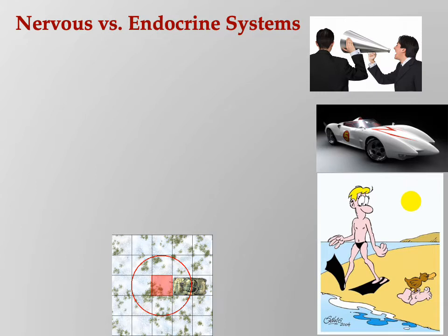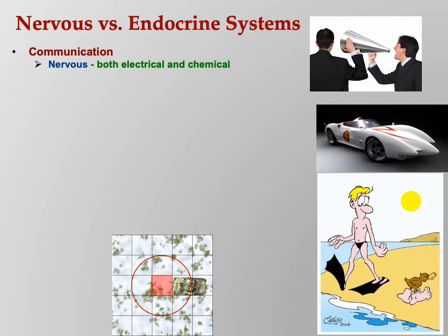Let's compare and contrast nervous and endocrine systems. Of the eleven organ systems of the human body, the two systems that control the rest are nervous and endocrine. With respect to communication, the nervous system is both electrical and chemical — electrochemical. Graded potentials and action potentials are electrical signals, but they cause the release of neurotransmitters, which are chemicals. The endocrine system is strictly chemical: hormones released into the bloodstream travel long distances and have effects.